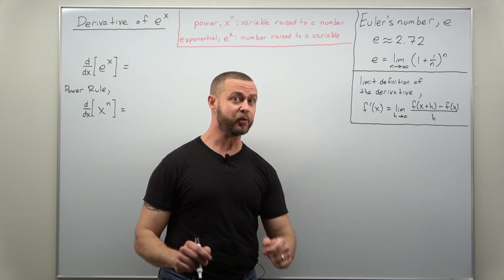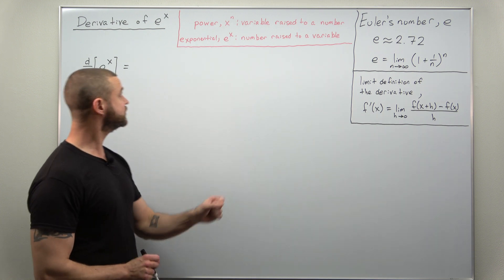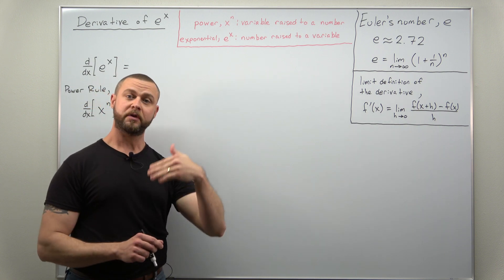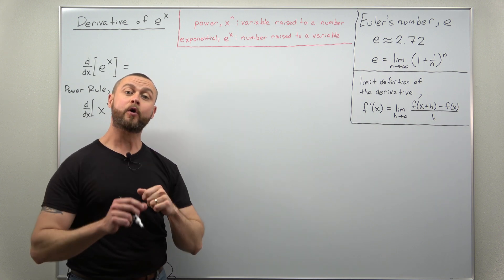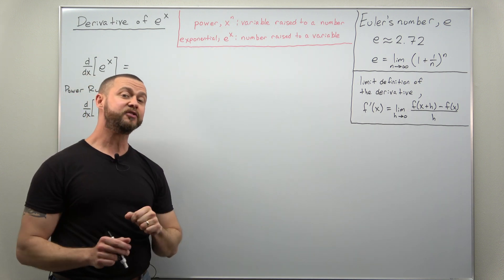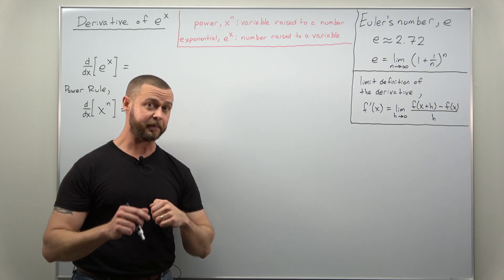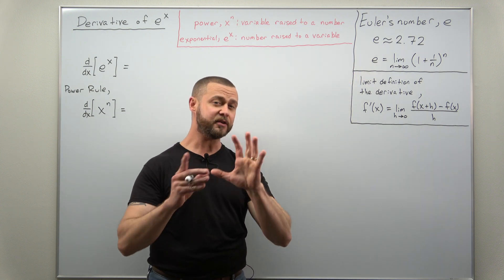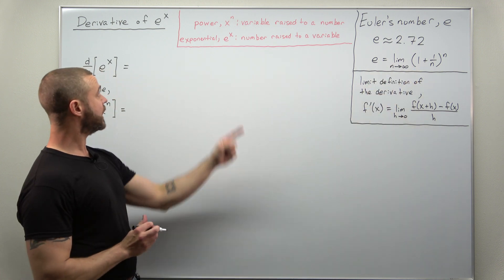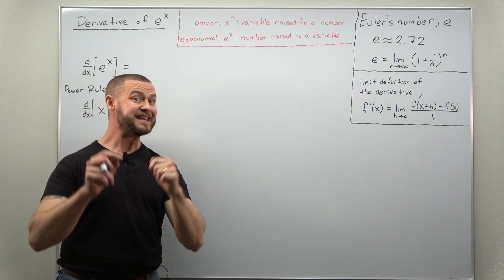We need to point out the difference between a power function and an exponential function — there's a very common mistake to be aware of. A power function is a variable like x raised to a number, such as x squared or x cubed. An exponential function flips that: a number raised to a variable. The exponential function used throughout Calculus 1 has base e, Euler's number, approximately 2.72, which has a limit definition.